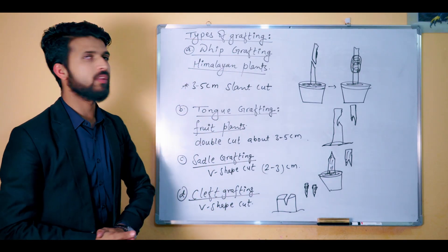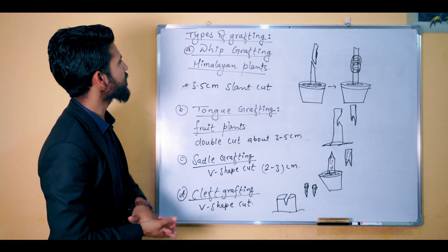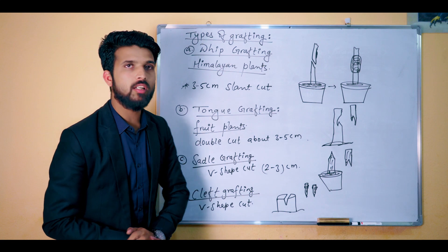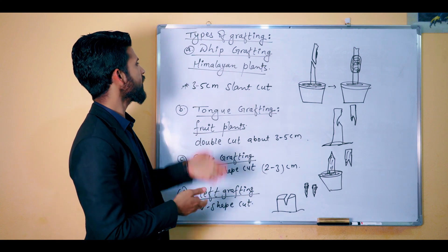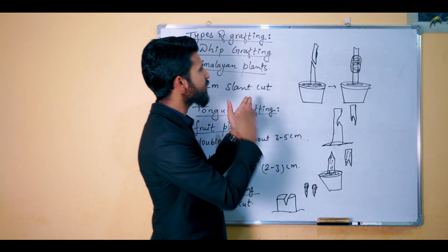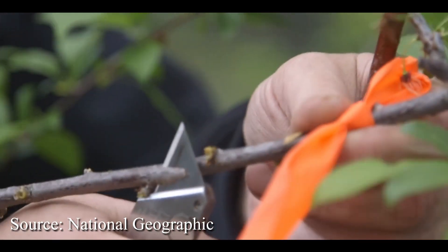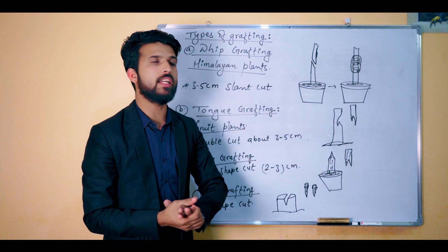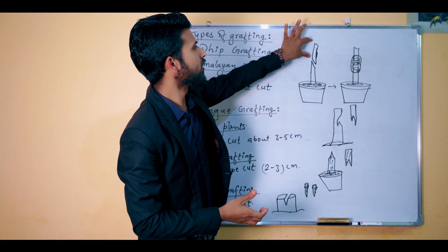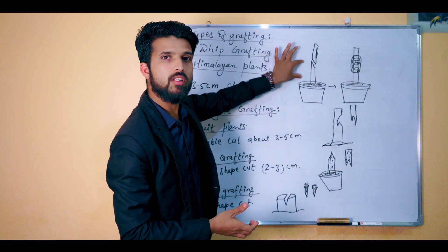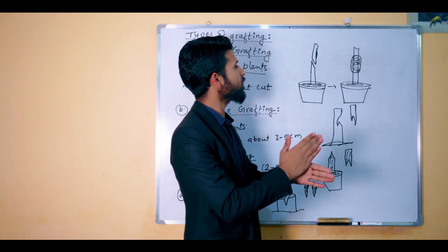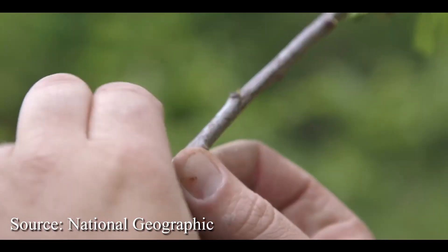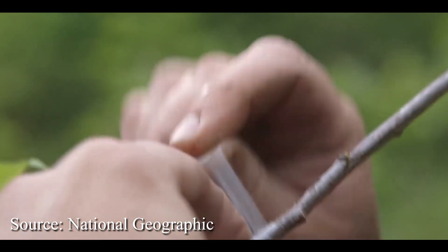One type is whip grafting. In whip grafting, we make a 3 to 5 cm slanted cut. This slanted cut is made on the stock. The stock is cut at this slanted angle, and then the joint is cut.